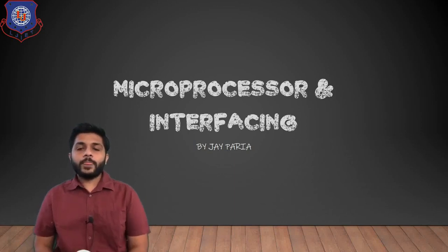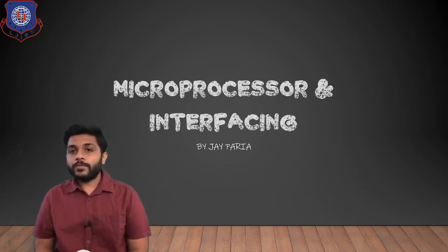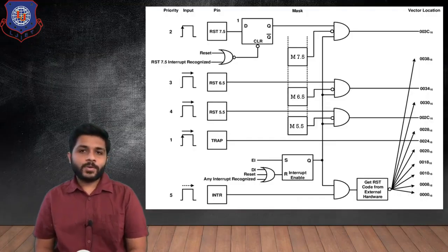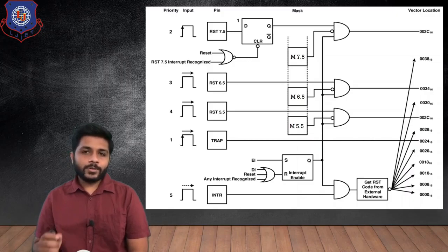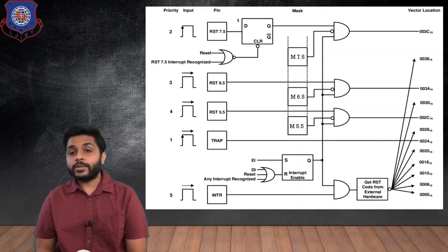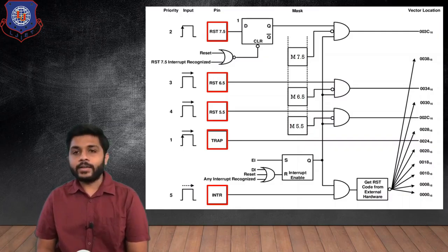Hi everyone, I'm Jay and today we are going to see the block diagram of interrupts for the microprocessor 8085. This is the block diagram — I know it looks a bit difficult but trust me it isn't. For the microprocessor 8085 there are five interrupts: TRAP, RST 5.5, RST 6.5, RST 7.5, and INTR.